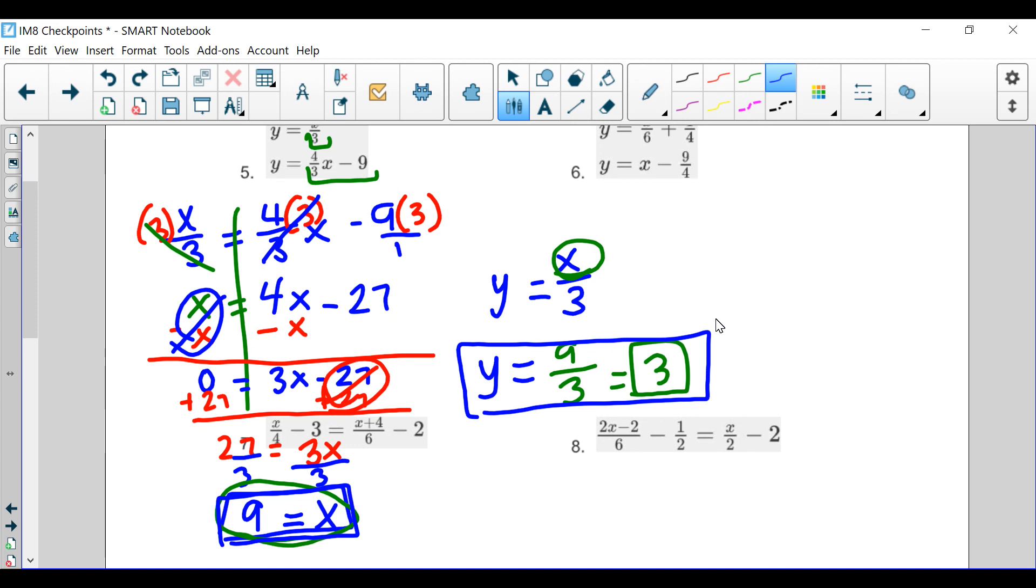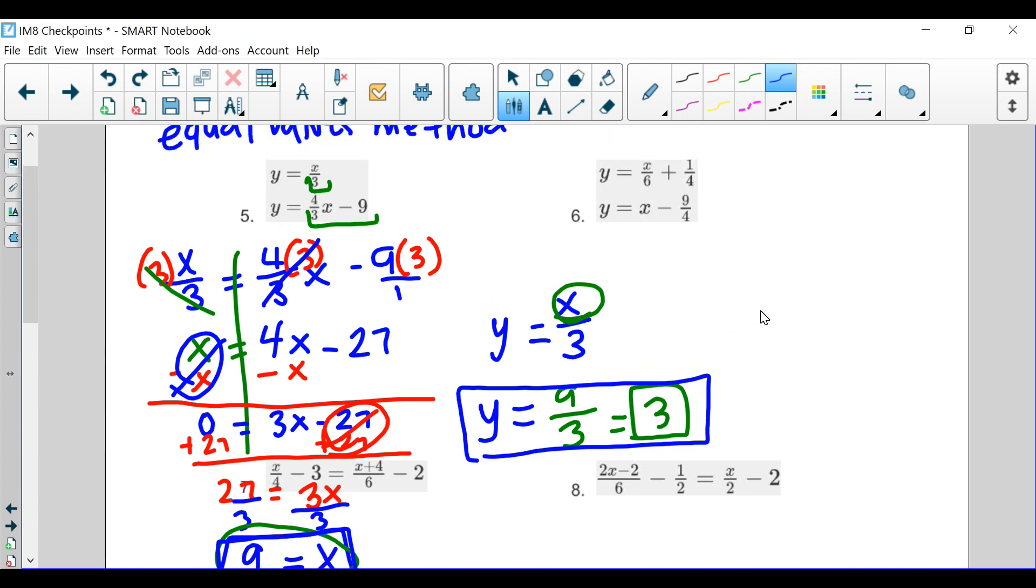So, in example number 6, it's really important that you, again, use the equal values method because both of them are equal to y. So, we've got x over 6 plus 1 fourth is going to be equal to x minus 9 over 4. And, then, you're going to go ahead and multiply by that 6 and 4 and eliminate, and you should be able to solve the problems. If you need any help, let me know at office hours. And, thanks for watching. See you guys next time.